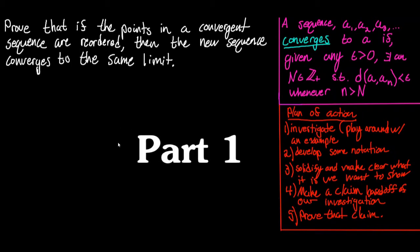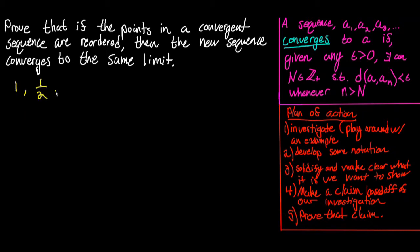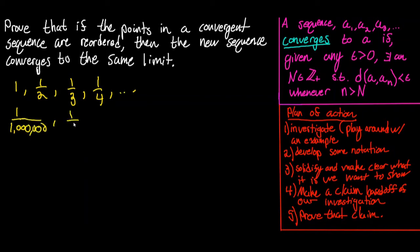Let's start with a convergent sequence that's easy to deal with: 1, 1/2, 1/3, 1/4, and so on. Let's take one possible reordering of this sequence — say 1 over a million, then 1 over 297, then 1 over 17, and so on.